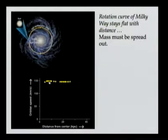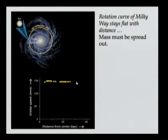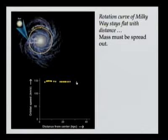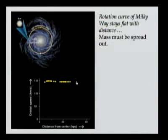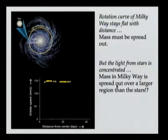So if we were to plot a rotation curve for the Milky Way, we see that the speed never really goes down. After you get about a few kiloparsecs away from the center of the galaxy, all stars are traveling at about the same speed. That's very different from the solar system, where the planets were traveling slower as they got further from the center. So that's evidence that the mass must be spread out. The mass is spread out, but the light from stars is concentrated.